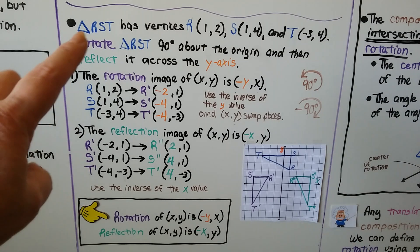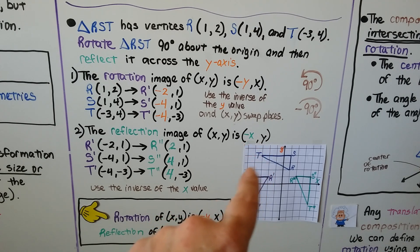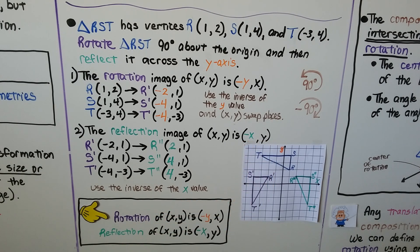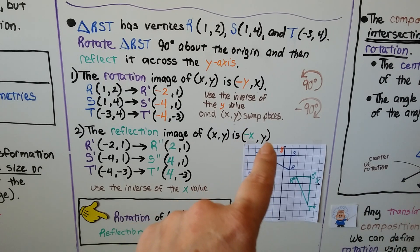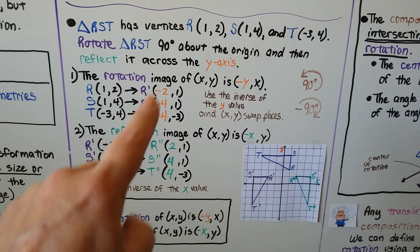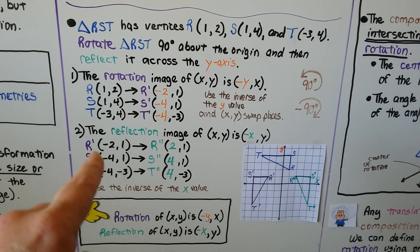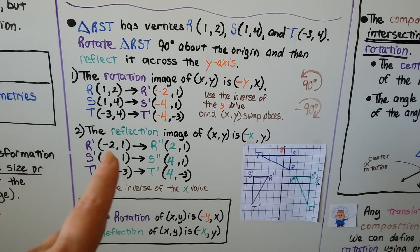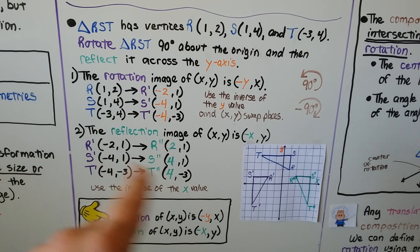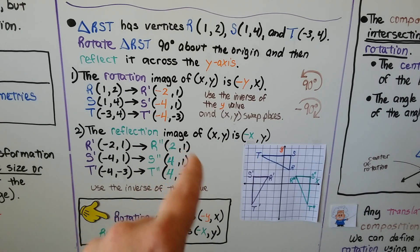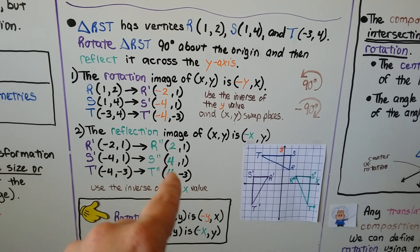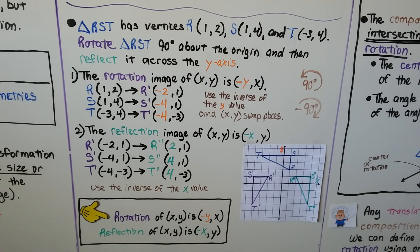Now for the reflection across the y-axis, the reflection image of (x, y) is (−x, y): we use the inverse of x and y comes along. R prime is at (−2, 1), so the inverse of x gives positive 2 — R double prime at (2, 1). S prime at (−4, 1) becomes (4, 1). T prime at (−4, −3) becomes (4, −3), using the inverse of each x value.